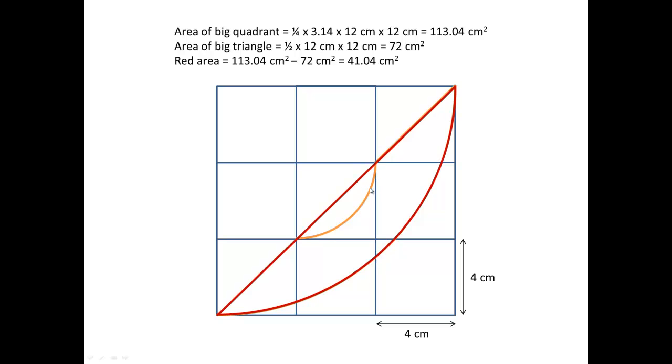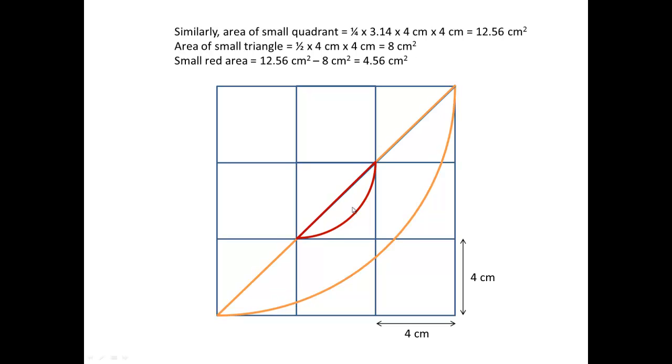Now, let's focus on finding the small red part here. The area of this small quadrant is one quarter times 3.14 times 4 times 4 to give us 12.56 cm squared. Similarly, the area of this small triangle is going to be half times 4 times 4 to give us 8 cm squared. So, this red part we are finding will be 4.56 cm squared.